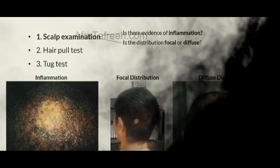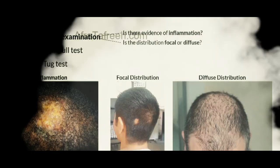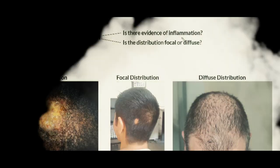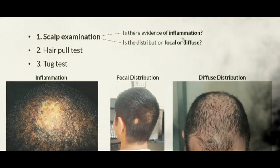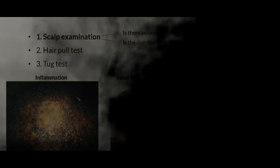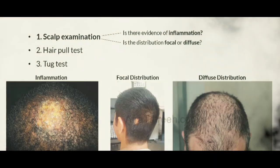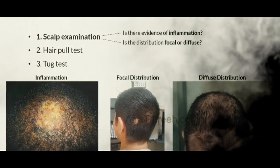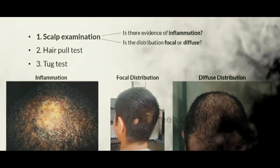During the scalp examination, there are two key questions we are trying to answer. The first is: is there evidence of inflammation? The second is: is the distribution of hair loss focal or diffuse? As an example, in this patient with alopecia, we can see erythema as well as scale, indicating inflammation. Recognizing the presence or absence of inflammation will allow us to distinguish the different types of alopecia.